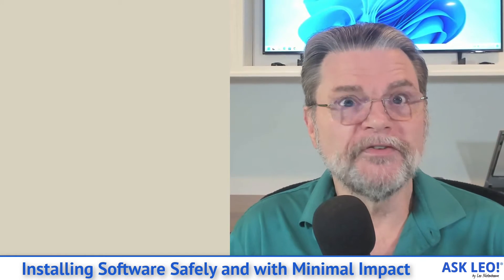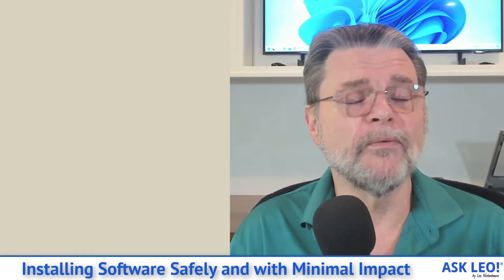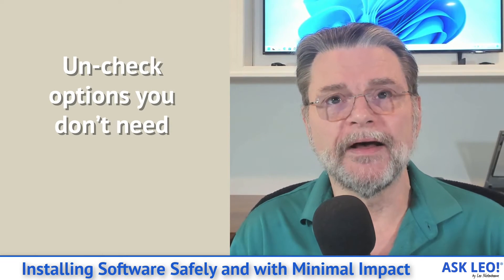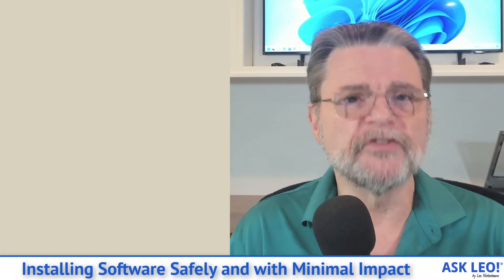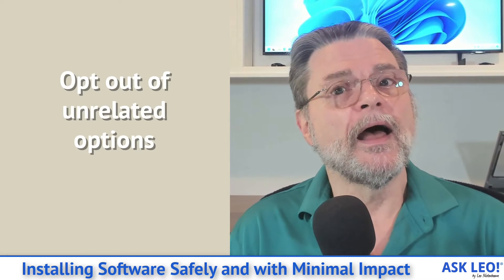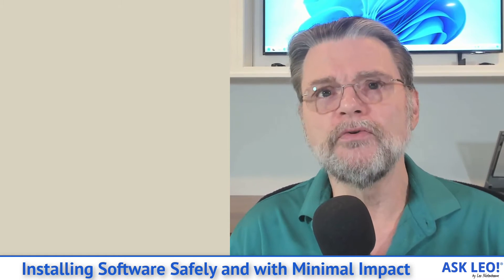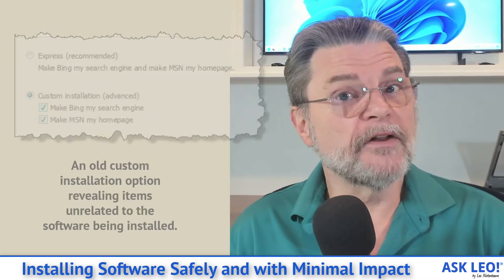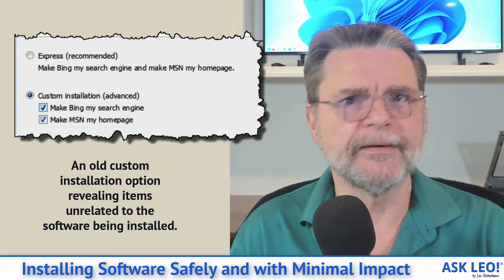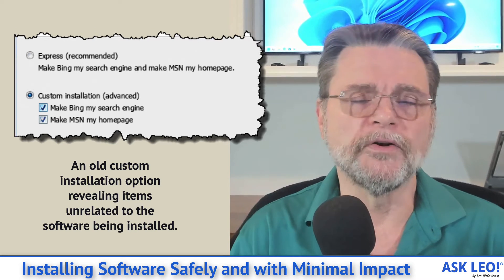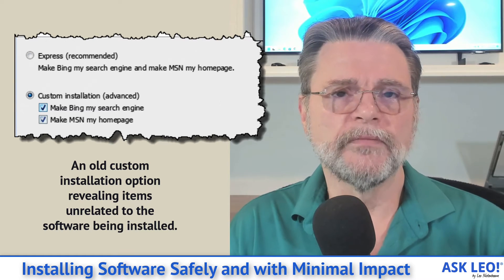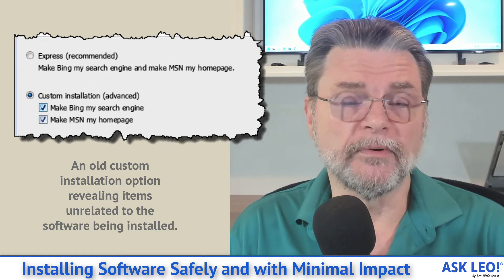Very often you will find in the advanced options things that you don't want or need. The worst case scenario is what we refer to as foistware. There will be checkboxes on the advanced screen — sometimes on the main screen — that say, 'Hey, while you're installing this, I've got this other thing we think you'll like, and I'll install it for you automatically.' If you never look at those options, you're going to get unrelated software you don't want or need. It happens often with a lot of free software, because it's how the free software makes money — they get a kickback or fee for successfully installing this other software on your machine. So pay very, very careful attention to all of the options available as you install software.